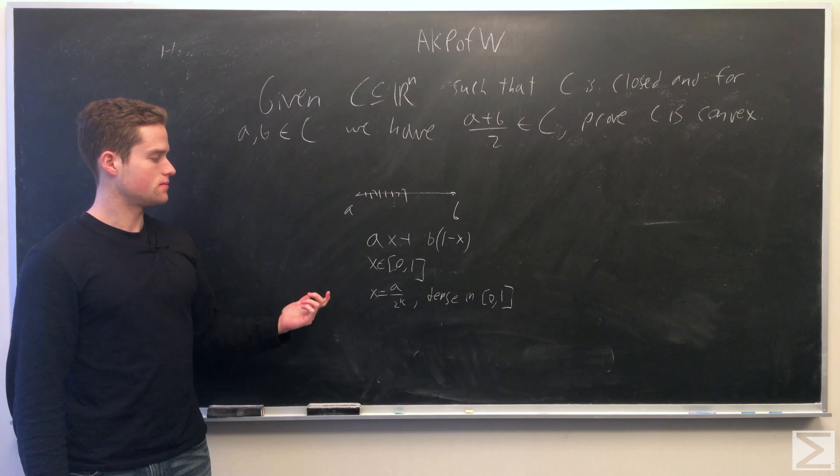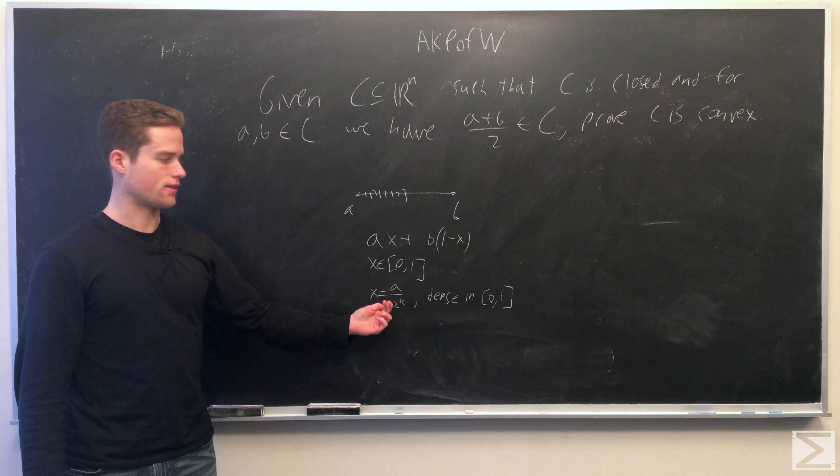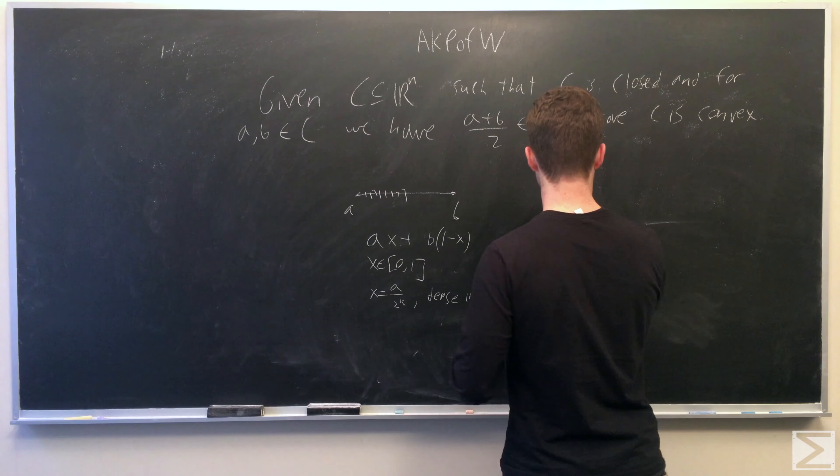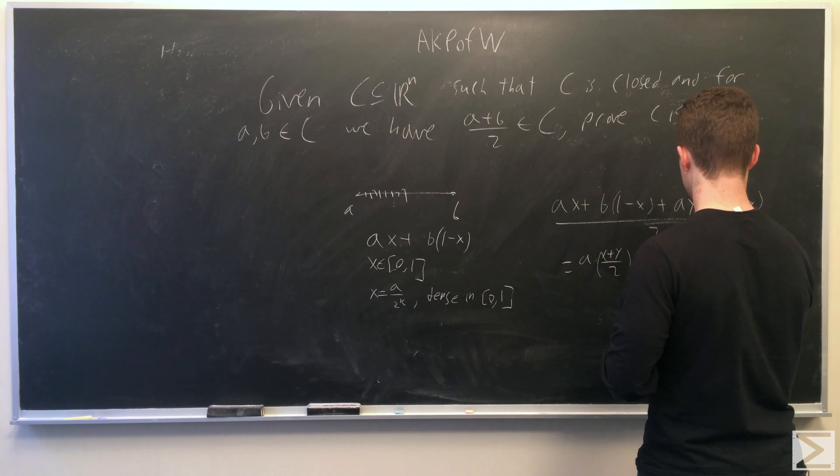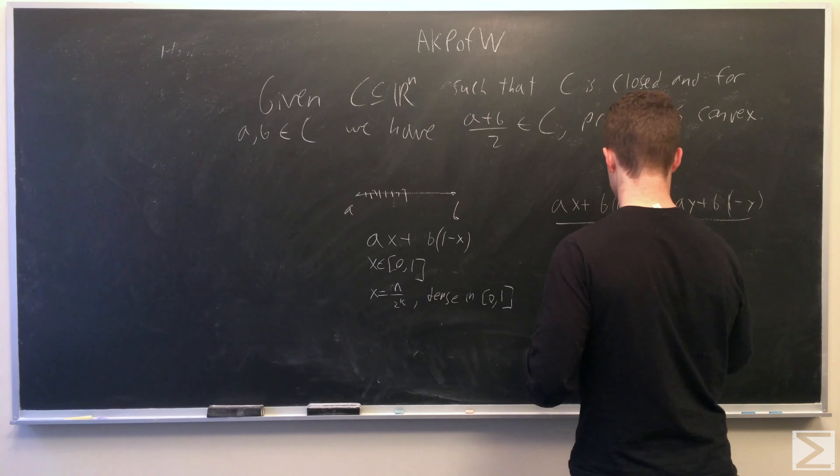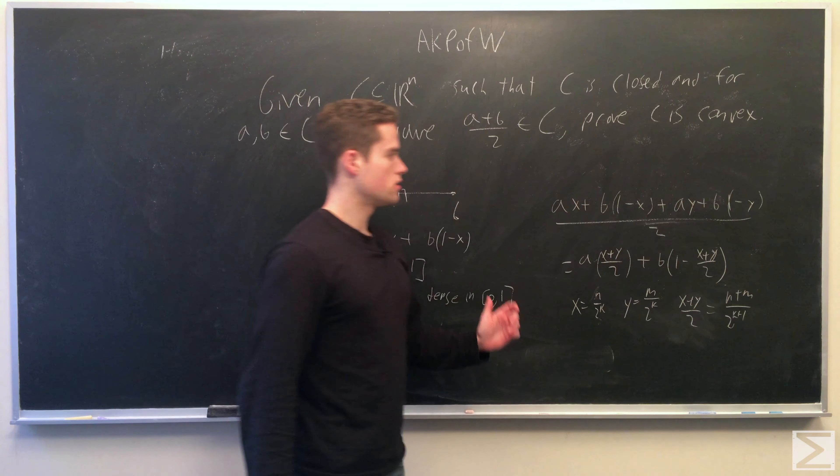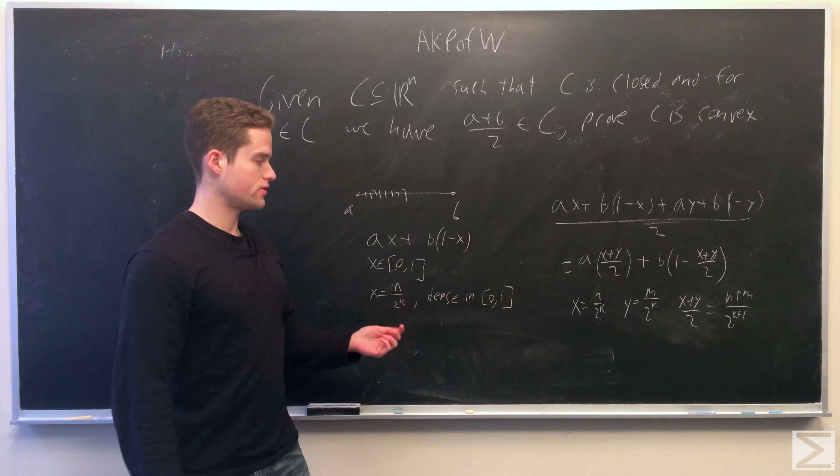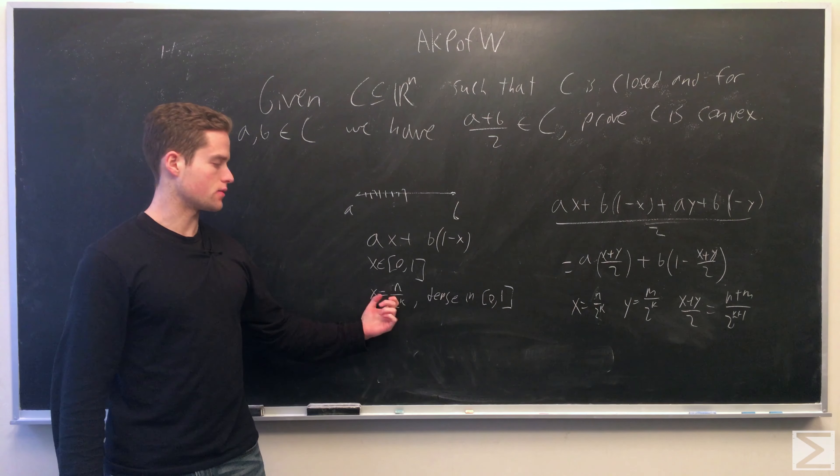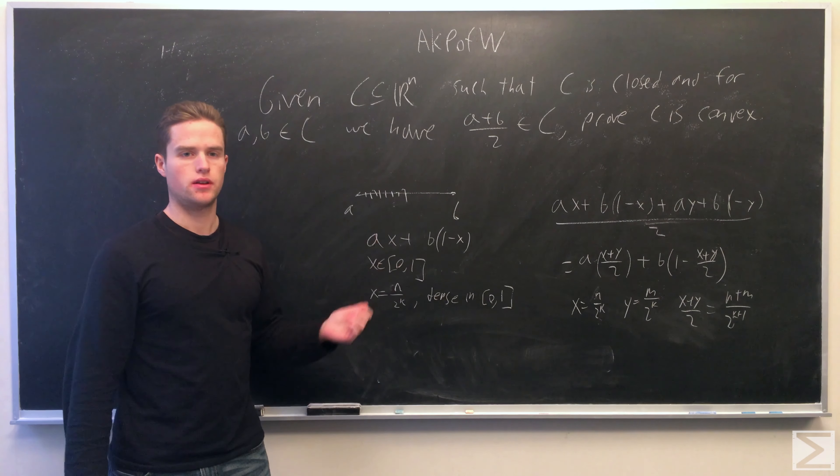So all we need to do is establish that we have all the dyadic rationals. We're going to do this inductively. First note, if we have the dyadics x equals n over 2^k for k less than or equal to some value z, we want to prove that we also have all the dyadics for k plus 1.